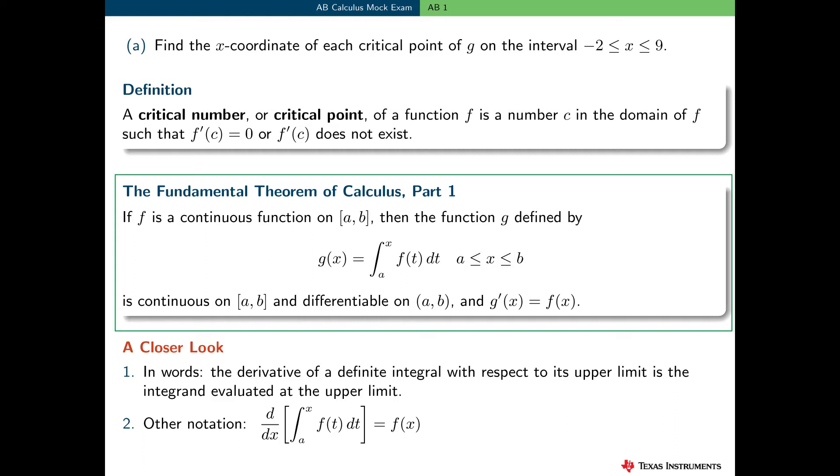It says if f is a continuous function on the closed interval AB, and the function g is defined by g of x is the definite integral from a to x of f of t dt, then g is continuous on the closed interval AB and differentiable on the open interval AB, and g prime of x is equal to f of x. Now, I often think of this function g as an area-so-far function. And what I mean by that is, if f of x is greater than or equal to 0, then we're accumulating the area under the graph of f from a to x.